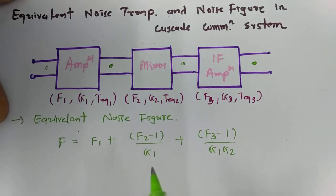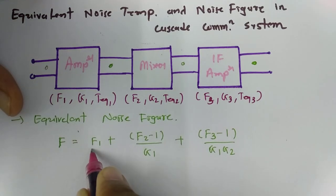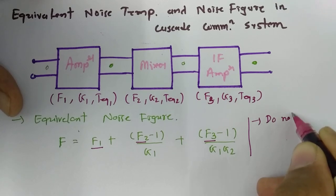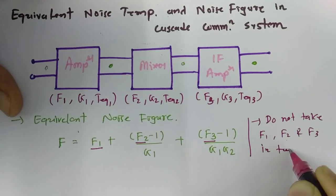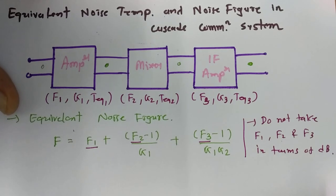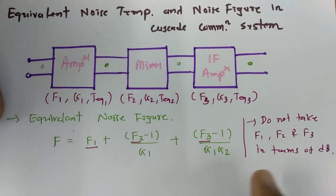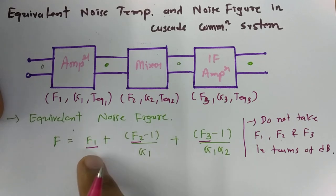An important mistake I've seen students make: when you calculate this formula, do not take F1, F2, and F3 in decibels (dB). The values must be in magnitude only, not in dB. Convert from dB to magnitude first, then substitute into the formula. Otherwise your calculation will be wrong.